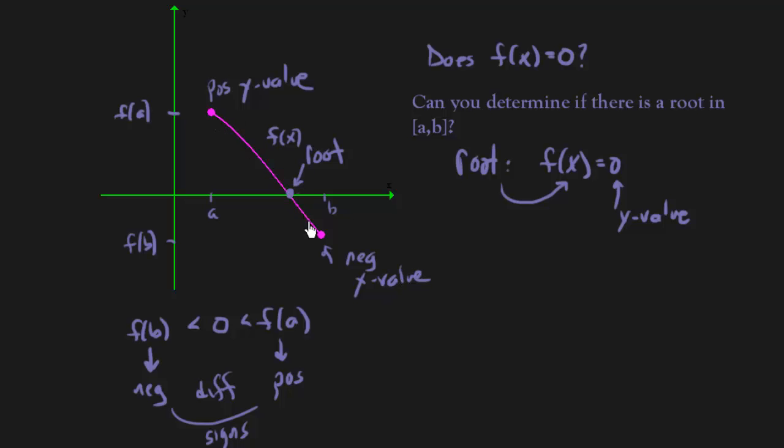Because how are you going to go from a positive y value to a negative y value without crossing the x-axis where your root is? Now that's why continuity was important. Because if your function is continuous, then you're forced to cross the x-axis. If you're not continuous, that may not happen.